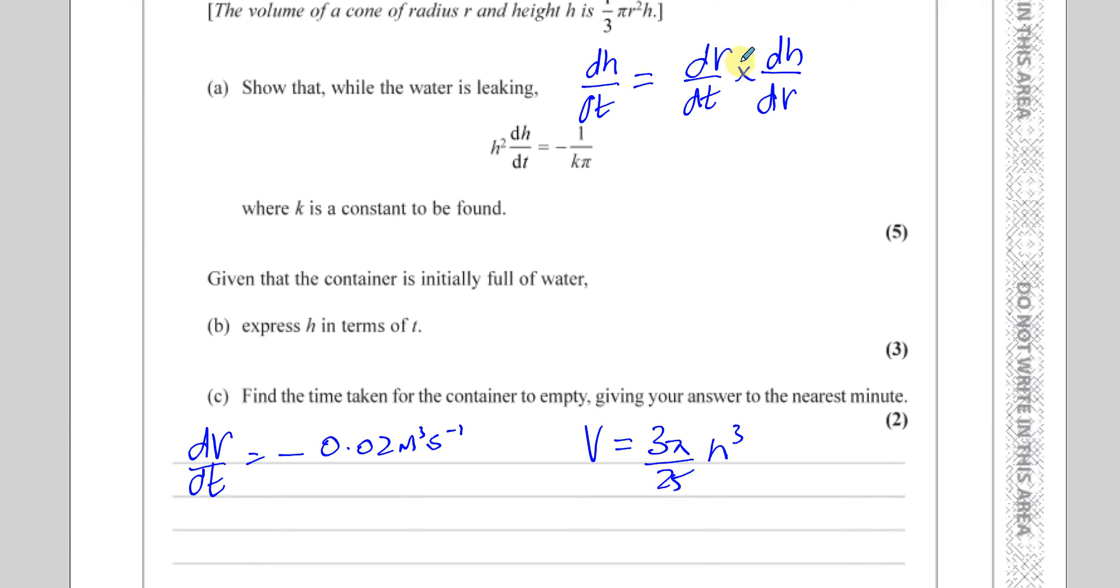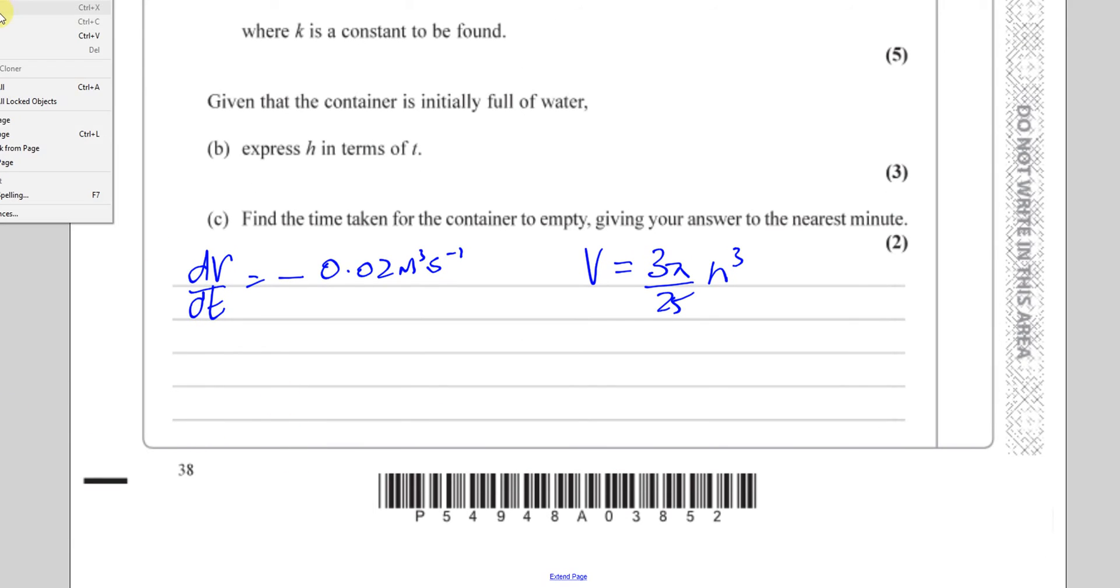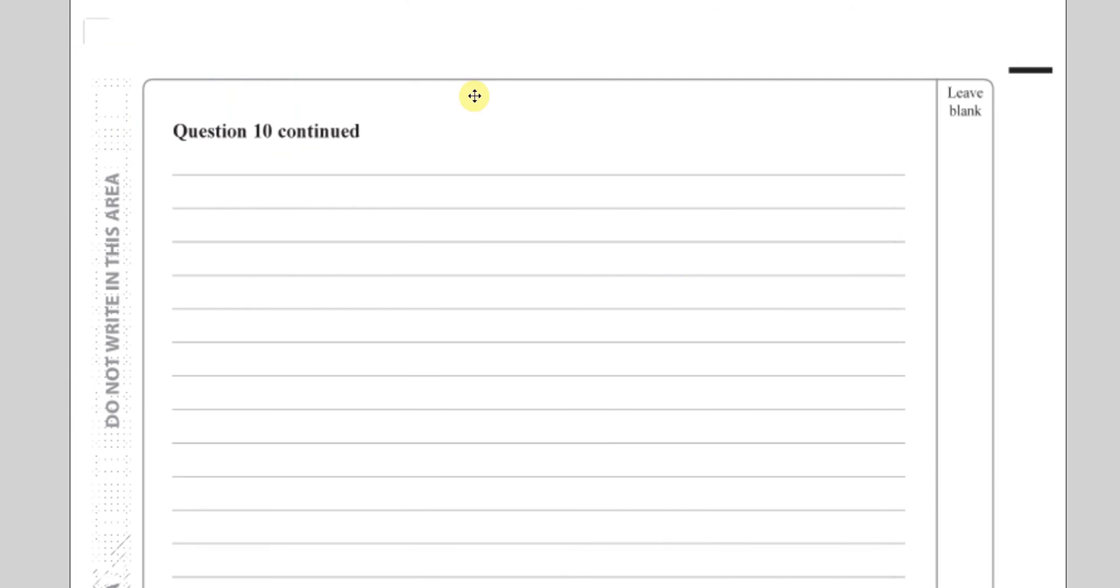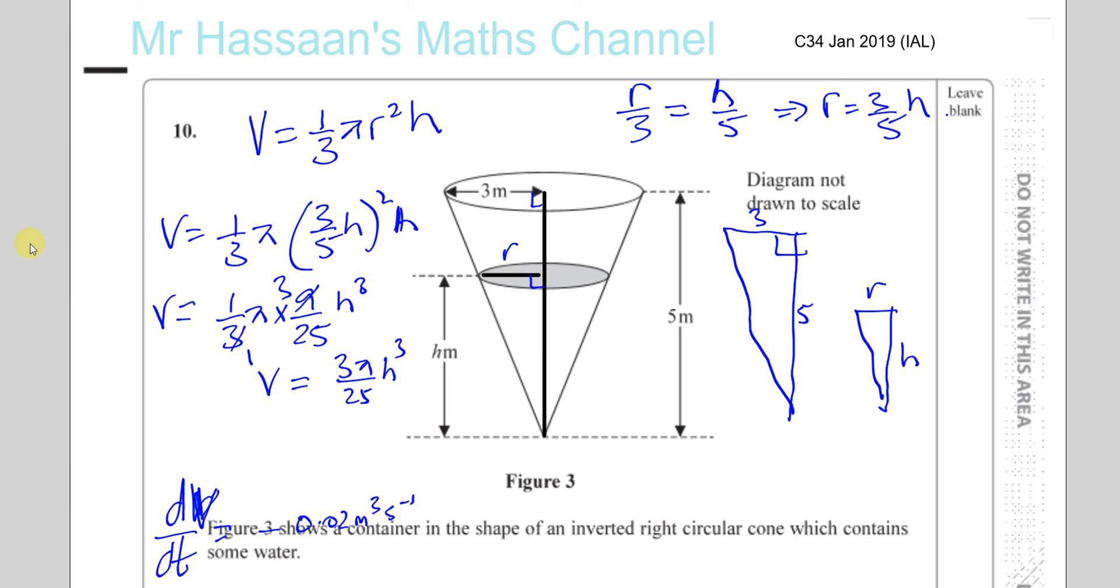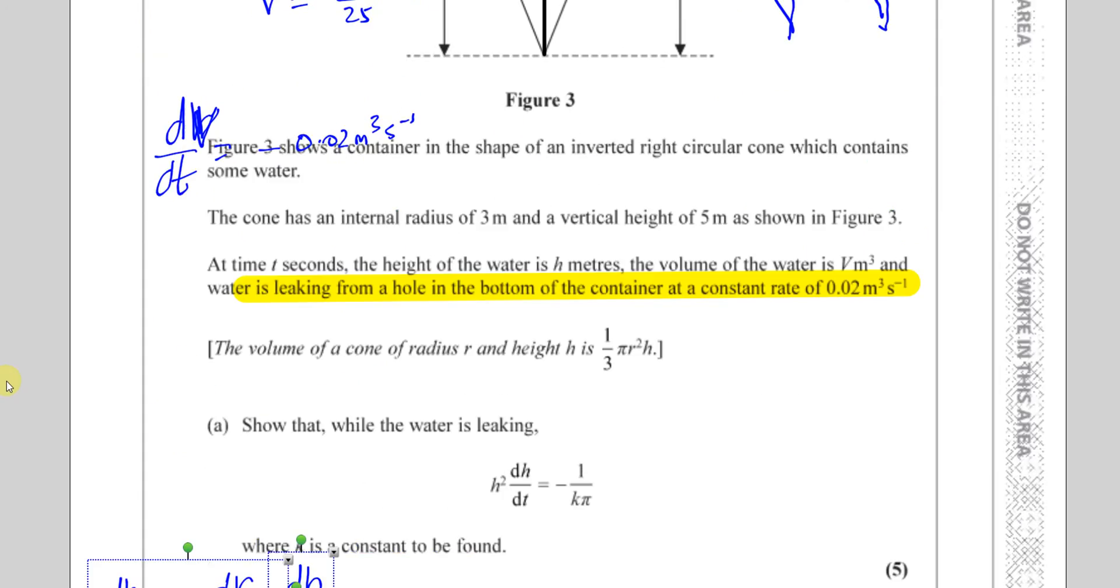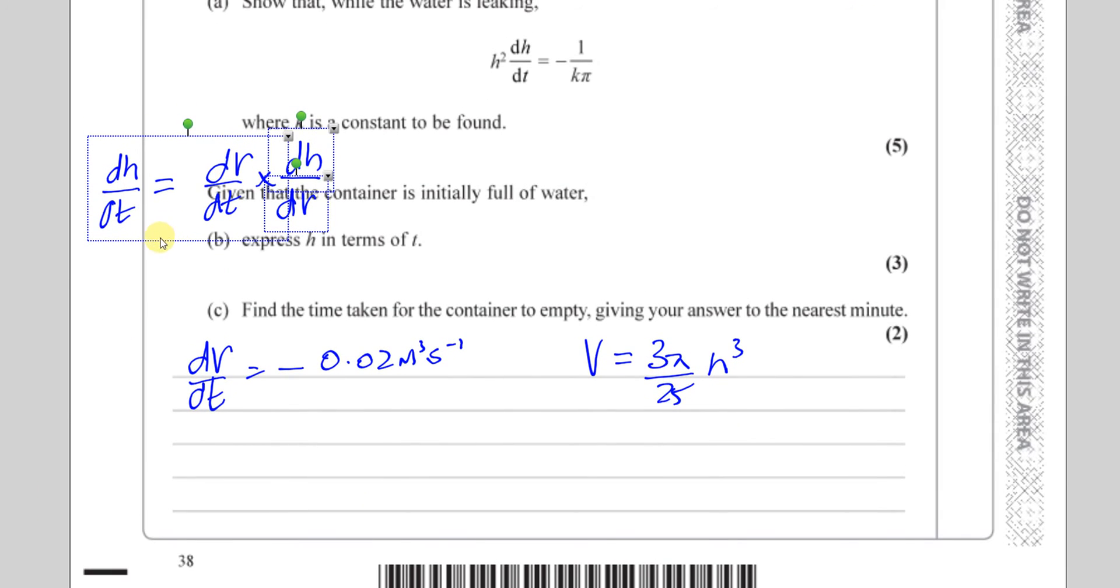So if I take the information I know so far, which is I know that dV/dt is equal to minus 0.02 meters cubed per second, and I know that my expression for v is equal to 3π/25 h cubed. And we're also taking this that we needed to find. We know that dh/dt equals dV/dt times dh/dv. So we need to find what dh/dv is. So first let's find dv/dh.